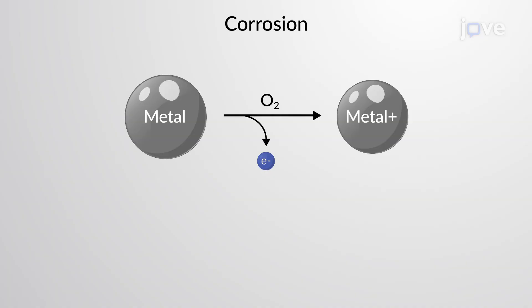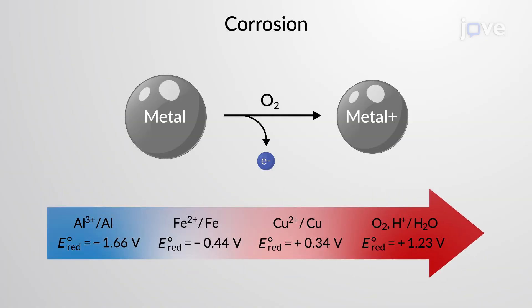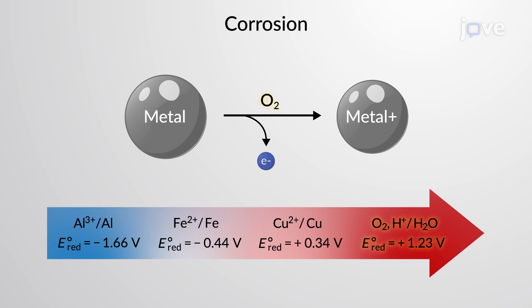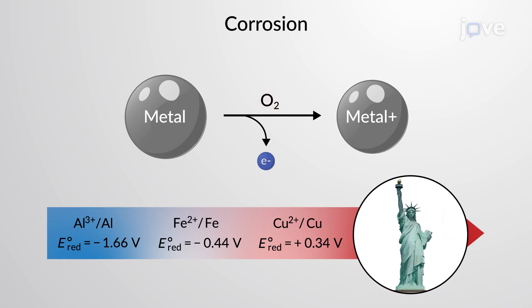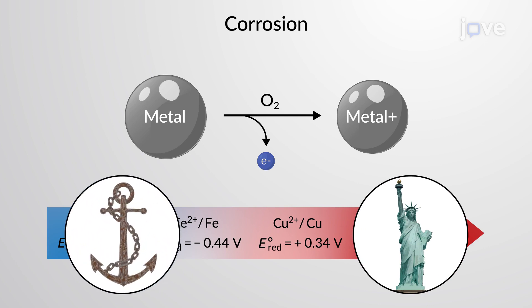Corrosion is the spontaneous oxidation of metal in the presence of an oxidizing agent, usually oxygen. It is the same phenomenon behind the blue-green color of the Statue of Liberty or a rusty anchor.